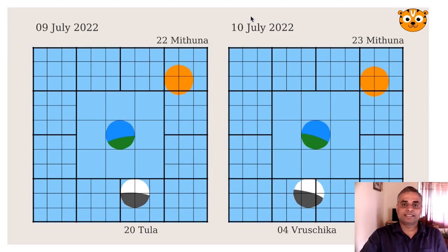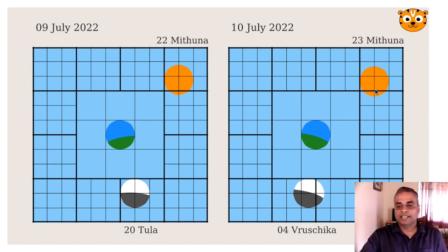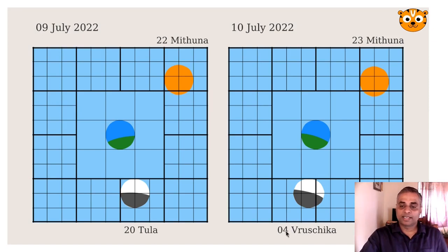Now let us see the next day, which is 10th July 2022. I have kept 9th July as a reference so we can see the changes in degree. The Sun has moved one degree, now at 23 degrees. The Moon has moved from Tula to Vrishchika — Tula is Libra and Vrishchika is Scorpio — and in Scorpio it is at approximately 4 degrees. The grid lines help us identify these minute movements.